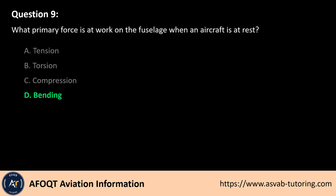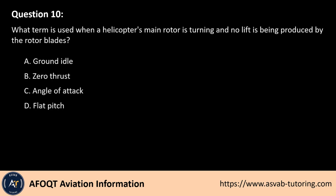The answer is D. When an aircraft is at rest, the primary force acting on the fuselage is bending. The aircraft's weight, including fuel, passengers, and cargo, causes the fuselage to bend slightly under gravitational force. Additionally, the landing gear supports the structure at specific points, leading to bending stresses as the fuselage resists sagging between these support locations.